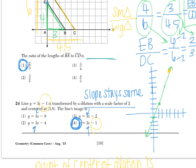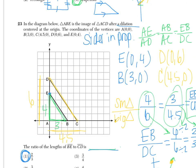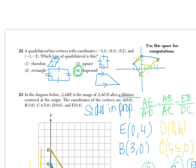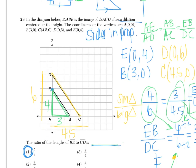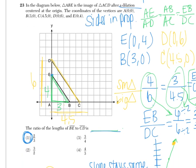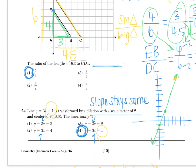Answers for this page: Number 22 is 4, 23 is 1, 24 is 4.